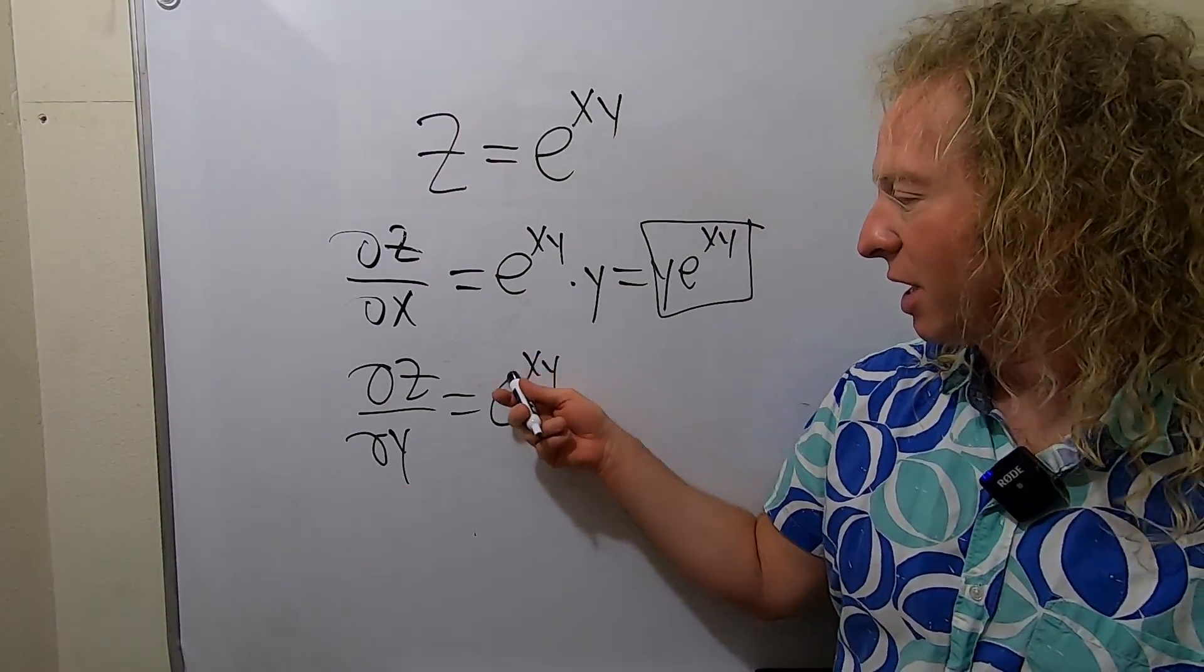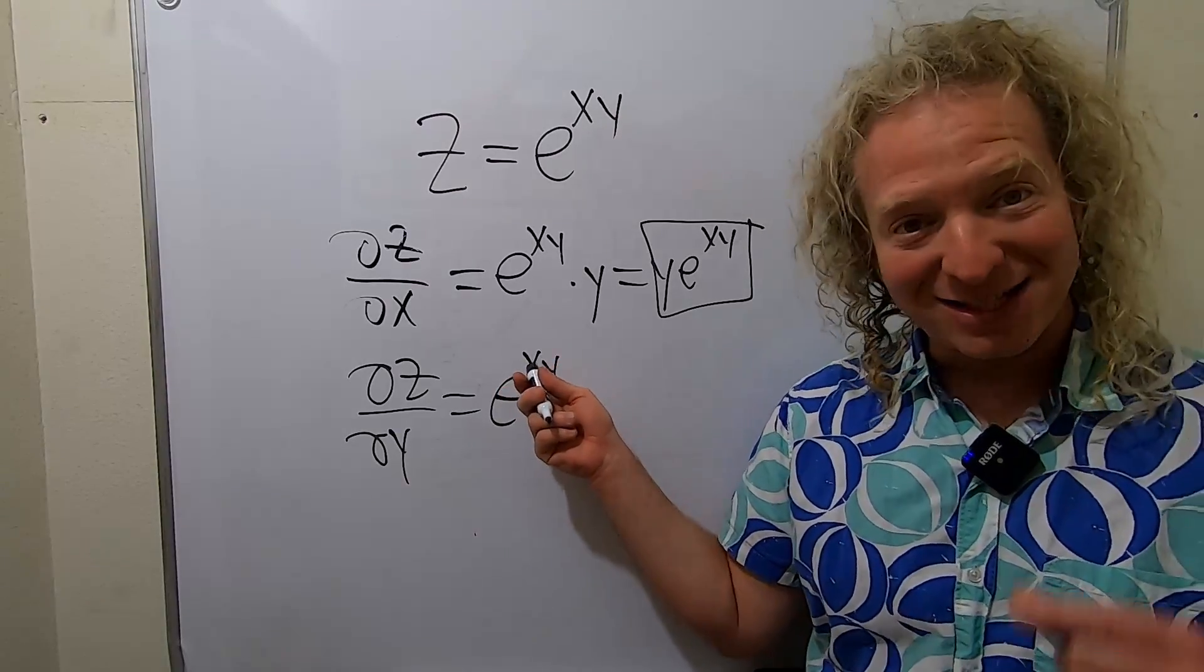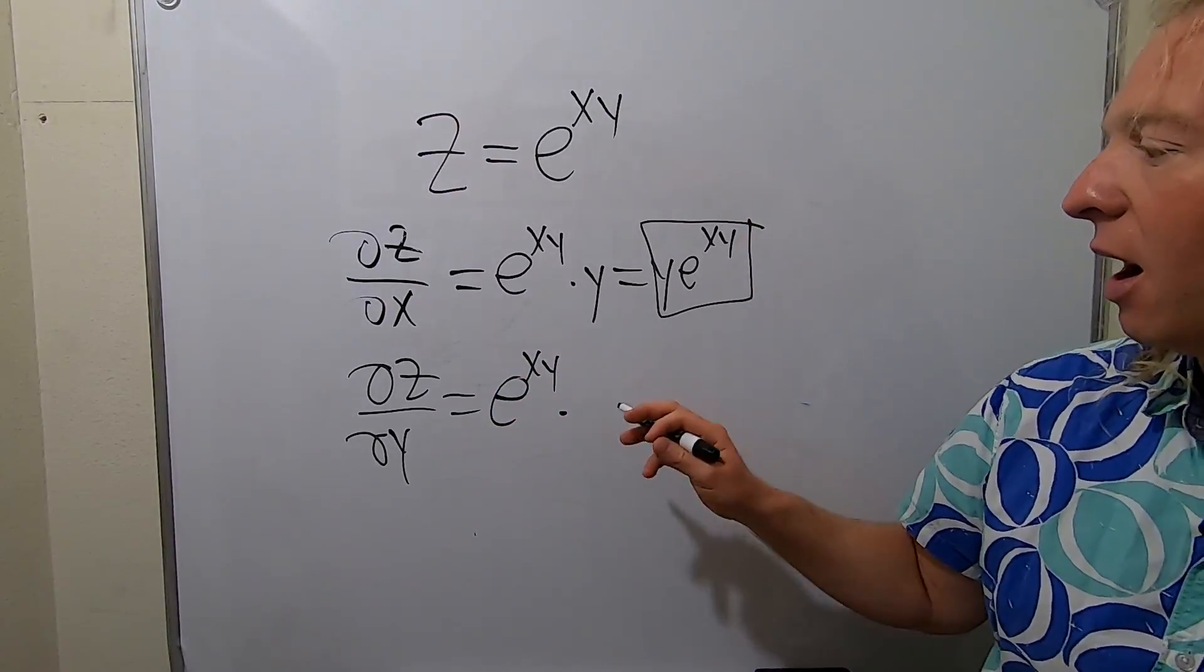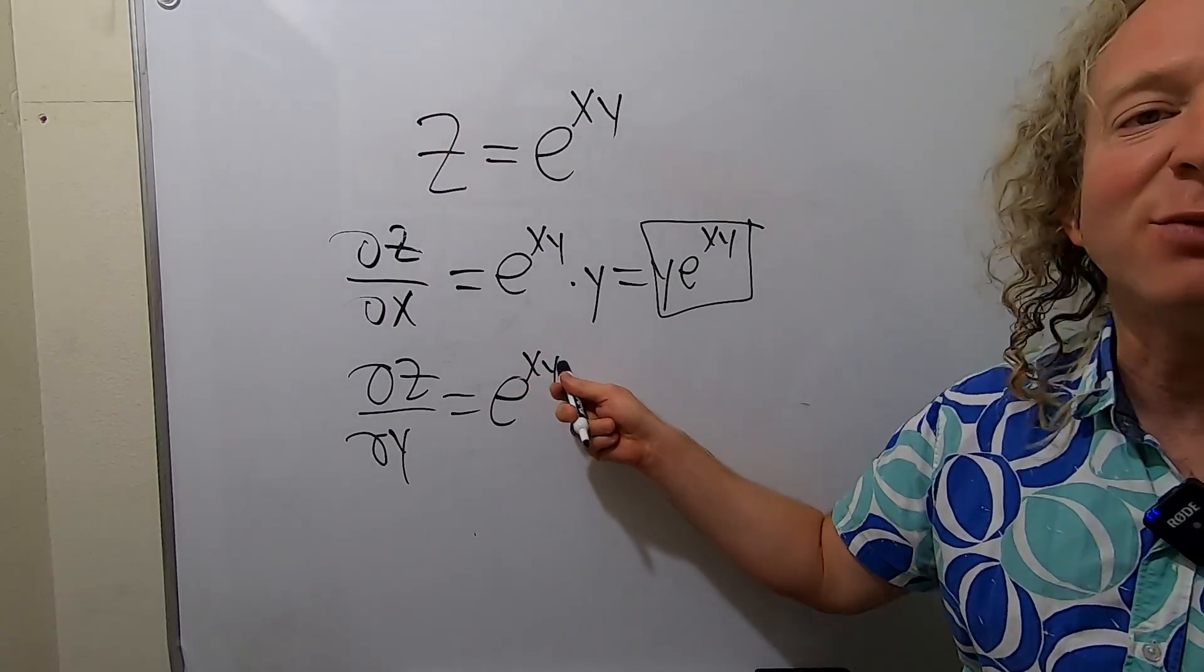Well, in this case, the inside function is xy, and x is a constant now. So the derivative of y is 1, so we just get x, because it's like x times 1.